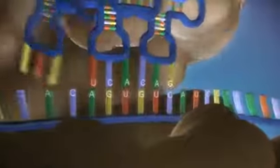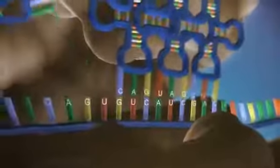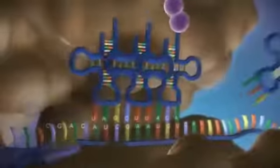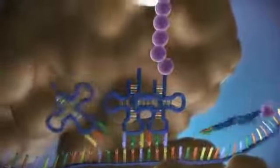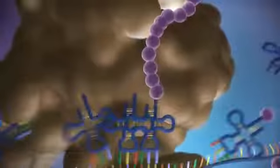The messenger RNA is read three bases at a time. As each triplet is read, a transfer RNA delivers the corresponding amino acid. This is added to a growing chain of amino acids.